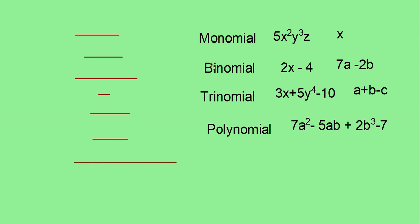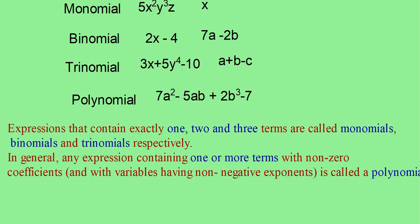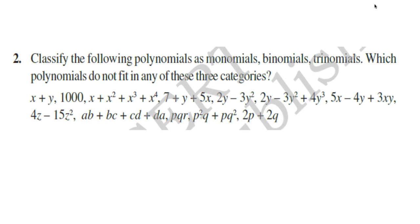So, we can write expressions that contain exactly one, two and three terms are called monomials, binomials and trinomials respectively. In general, any expression containing one or more terms with non-zero coefficients and with variables having non-negative exponents is called a polynomial. Polynomial in detail we will study in higher classes.